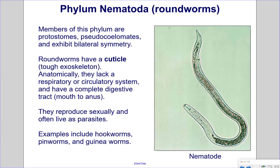Phylum Nematoda — the roundworms. Members of this phylum are protostomes, pseudocoelomates, and exhibit bilateral symmetry. Roundworms have a cuticle that acts as a tough skeleton. Anatomically, they lack a respiratory or circulatory system and have a complete digestive tract from mouth to anus. They reproduce sexually and often live as parasites. Examples include hookworms, pinworms, and guinea worms.